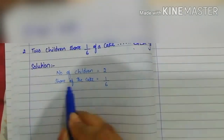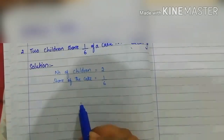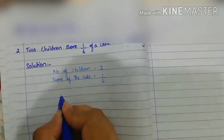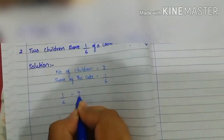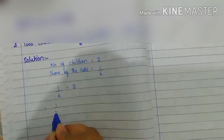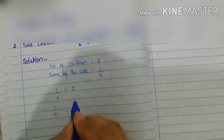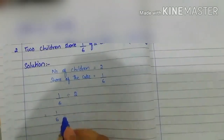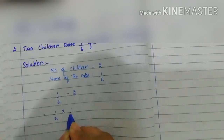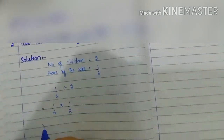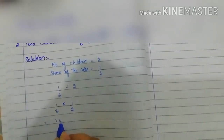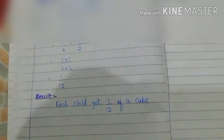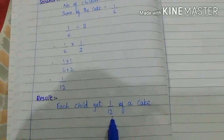Number of children = 2. Share of the cake = 1/6. We divide the fraction of the cake between 2 children: 1/6 divided by 2. We write the reciprocal of 2, which is 1/2, and change the division sign to multiplication. Multiplying numerators and denominators: 1×1 = 1, and 6×2 = 12. So the result is each child gets 1/12 of the cake.